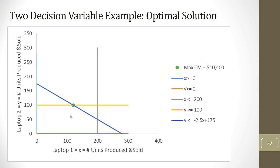We also saw this problem using Excel. And we solved, and Excel told us at x equals 120, that's the number of laptops sold for laptop number one, and at units of 100 for laptop two, we're going to get our optimal solution of 10,400.